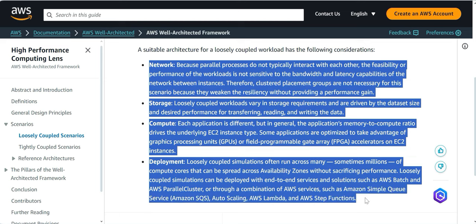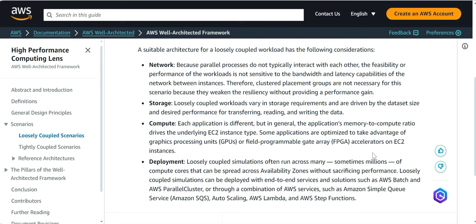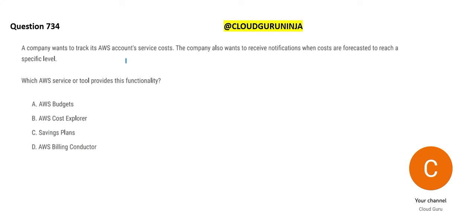You can pause and read those considerations. The next question is about tracking your service costs. The company wants to receive notifications when costs exceed a forecasted budget — for example, you budget $4,000 per month and want an alert when you're approaching or exceeding, say, $3,500, so you can manage spending.